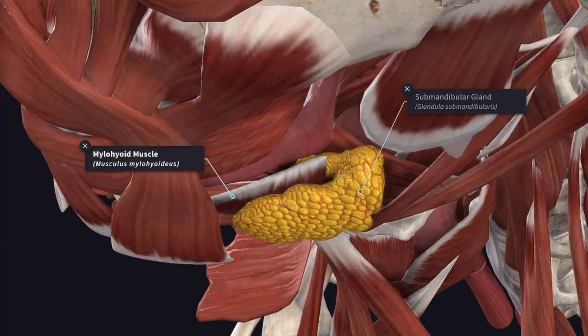Looking at the parts of the submandibular salivary gland, each gland consists of a large superficial part and a small deep part. Both parts are continuous around the posterior border of the mylohyoid muscle.